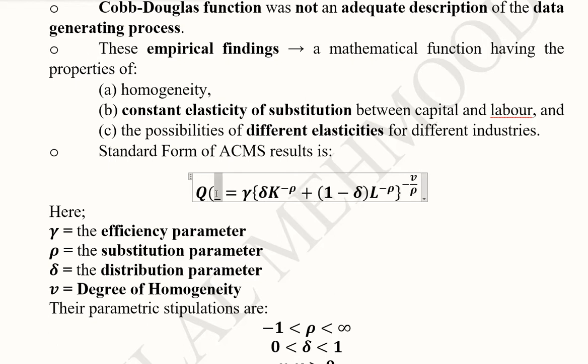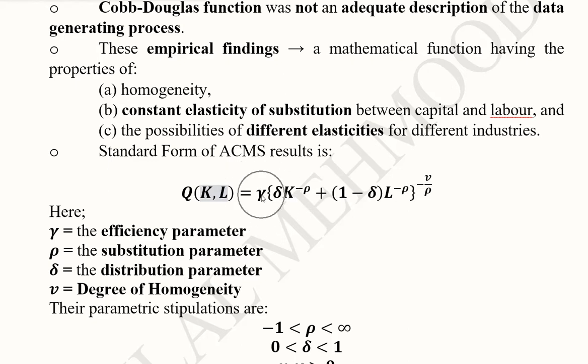We have γ, the efficiency parameter that determines the efficiency of the production function. This is the coefficient. If γ = 1, production stays at the same level. If γ > 1, production increases manifold depending on its value. If γ = 2, production doubles. If γ < 1, production is reduced.